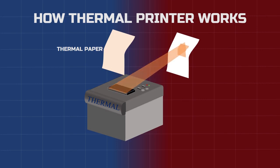When heat is applied to this thermal paper according to the text or image, it forms the text at that area, as shown here. But since the chemical on the paper fades away after some time, the print on the paper also starts fading and eventually completely disappears from the surface of the page.